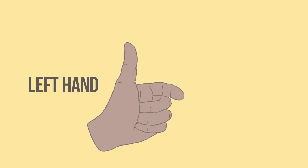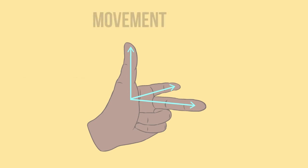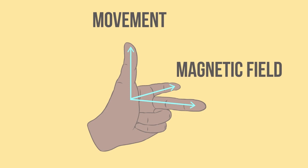spread out your thumb, first finger and the second finger, so they are all at 90 degrees to one another, so as to represent three axes: direction of motion or force, magnetic field, and current.